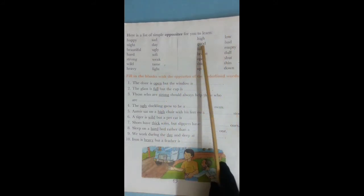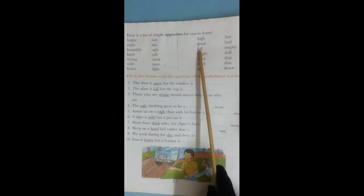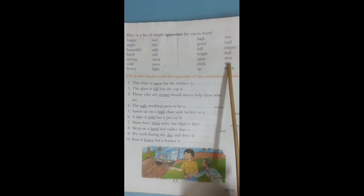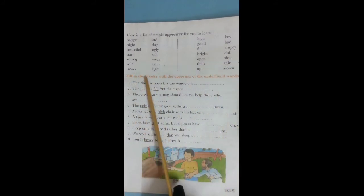The second line: High, low. Good, bad. Full, empty. Bright, dull. Open, shut. Thick, thin. Up, down.